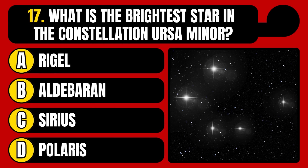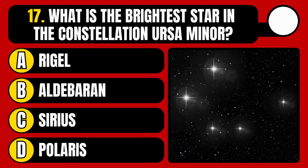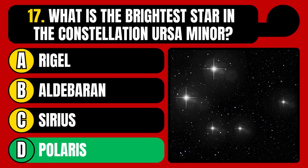What is the brightest star in the constellation Ursa Minor? Rigel, Aldebaran, Sirius, or Polaris? The correct answer is option D, Polaris.